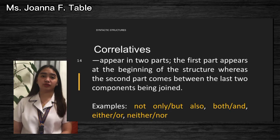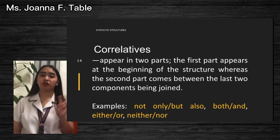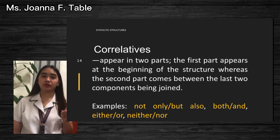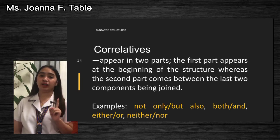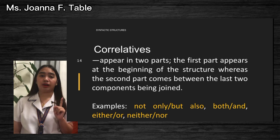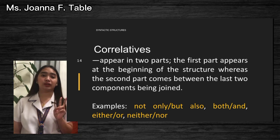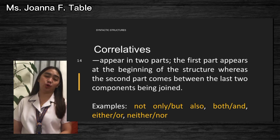Aside from coordinators, we also have correlatives. Correlatives appear in two parts. The first part appears at the beginning of the structure, whereas the second part comes between the last two compounds being joined.